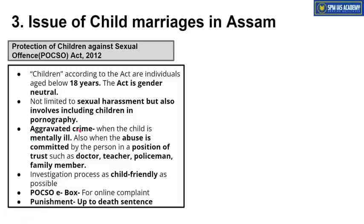POCSO Act ke andar ek provision hai of aggravated crime. Aggravated crime is when a crime is conducted against a child who is mentally ill, or when there is abuse of power by a person holding a position of trust — jaise doctor, teacher, policeman, or family member. Agar aisa insaan sexual offense commit karta hai against a child, toh us case mein jo penalty hai, that would be of a higher degree and this crime would be considered as aggravated crime. The investigation process under POCSO Act is designed to be child-friendly, taaki bacchon pe koi zyada psychological scar ya negative impact na ho.